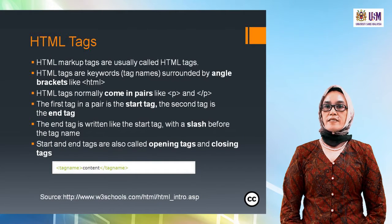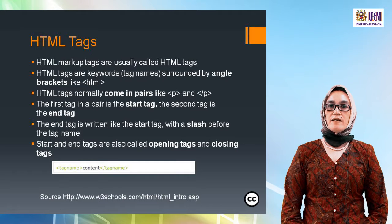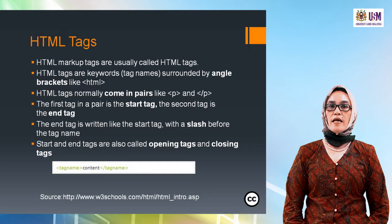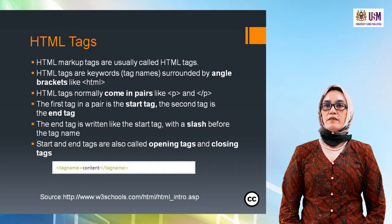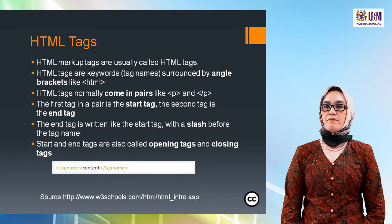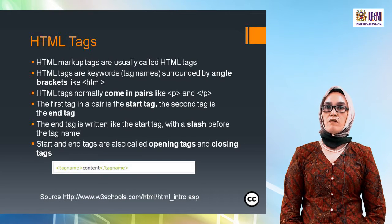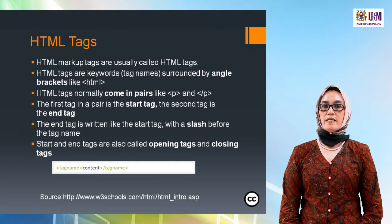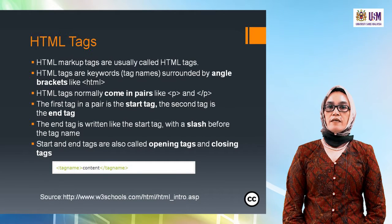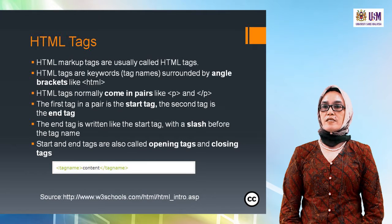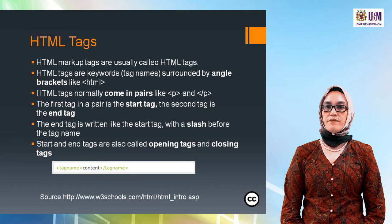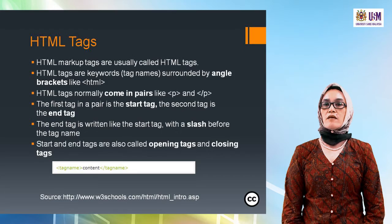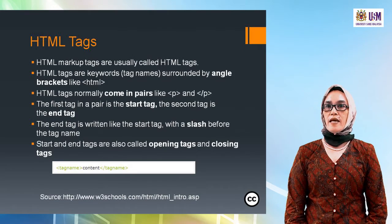HTML markup tags are usually called HTML tags. HTML tags are keywords — tag names surrounded by angle brackets like HTML. HTML tags normally come in pairs like P for paragraph and closing P. The first tag in a pair is the start tag, the second is the end tag. The end tag is written like the start tag but with a slash before the tag name. Start and end tags are also called opening and closing tags.